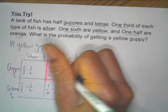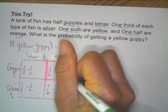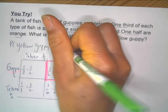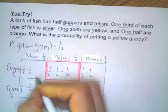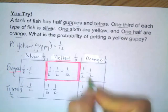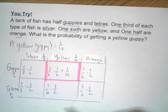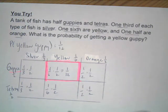Multiplying those together, one-twelfth of the fish are yellow guppies. If you added all of these fractions together they would sum to one whole — all the fish in the tank — so that's your check as well. Good luck.